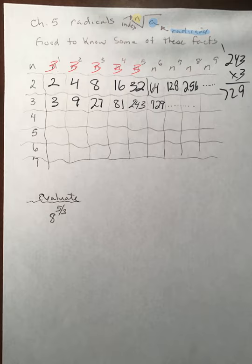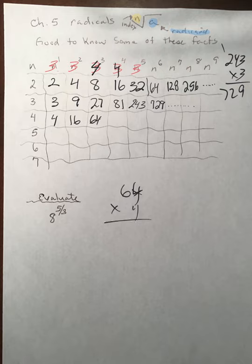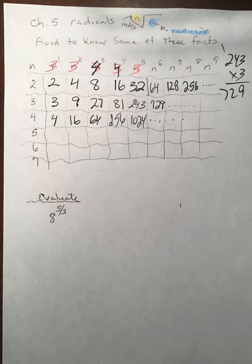Then we've got the fours. Four to the first power, four squared is 16, four to the third power is 64, four to the fourth power — multiply 64 times another four — is 256, and then 256 times another four is 1024. As you can see it's really starting to climb, so I'm not going to go any further than that because the numbers get really large quickly.